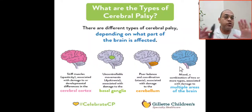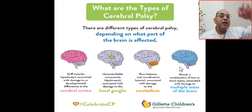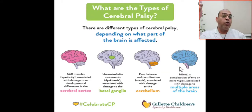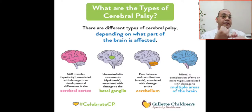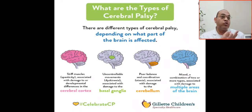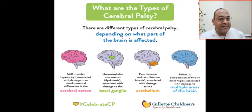The fourth type is mixed CP — a combination of two or more types, associated with damage to multiple areas of the brain such as the cerebral cortex, basal ganglia, thalamus, or cerebellum. To summarize: spastic CP involves the cerebral cortex; dyskinetic or choreoathetoid CP involves the basal ganglia; ataxic CP involves the cerebellum; and mixed CP involves different parts of the brain.